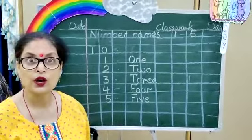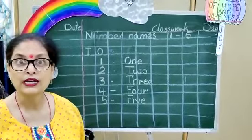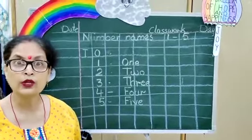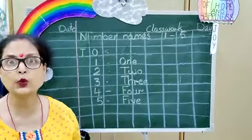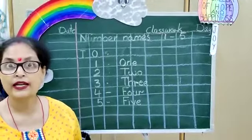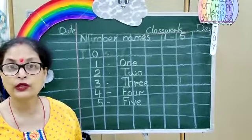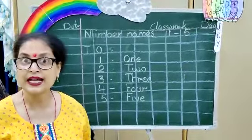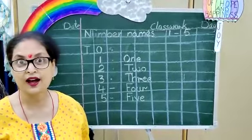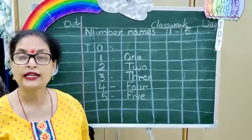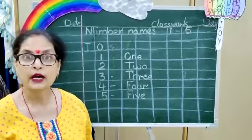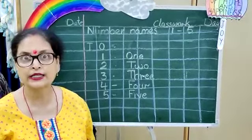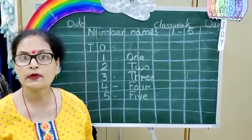Now I am going to teach you how to learn number names. Do you know what number names are? They are sight words. I have given you sight words in English — like this, that, these, are, all — like that. The number names are to be learnt by memorising them.